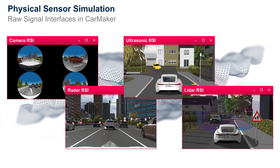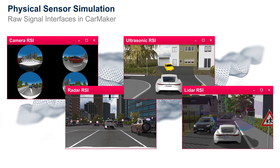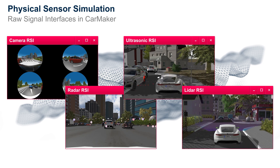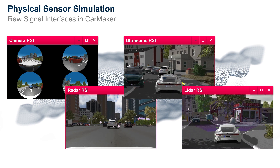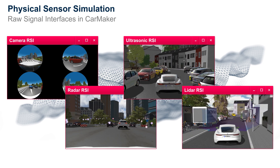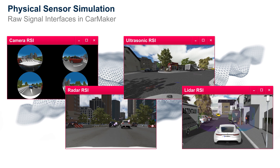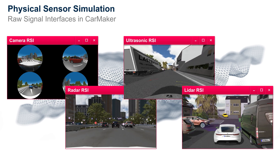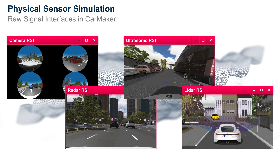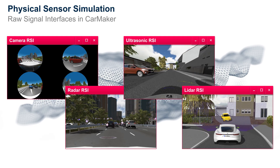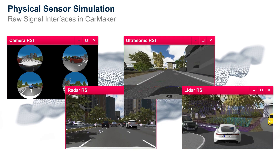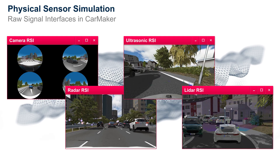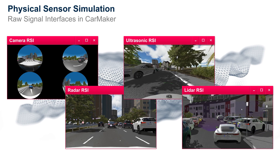CarMaker offers very advanced models for all relevant autonomous vehicle sensors: camera, LiDAR, radar, and ultrasonic. All of these models are continuously refined and made more detailed while still being highly performing and real-time capable. Let's take a look at some news for two of these sensor technologies.